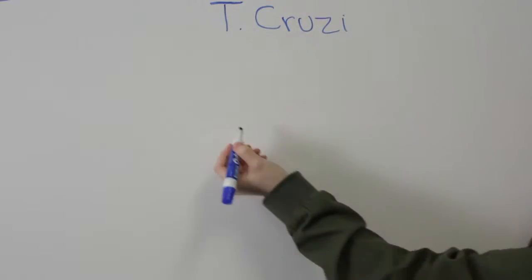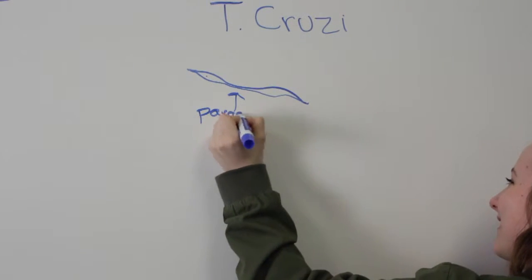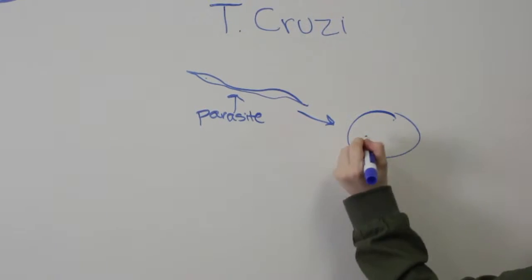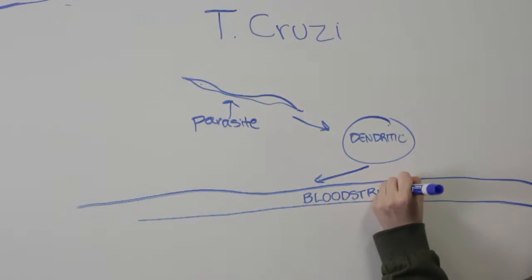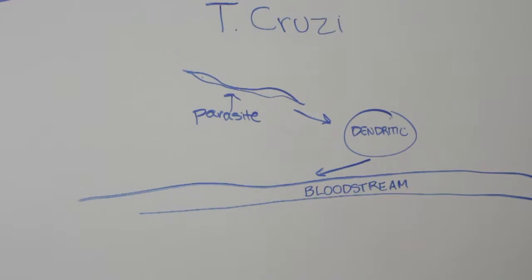Chagas is caused by a protozoan parasite called Trypanosoma cruzi, or T. cruzi. The parasite enters the body through a variety of transmission vectors and invades the body's dendritic cells, eventually entering the bloodstream.